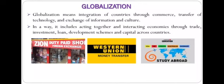From the images given, you can understand what are all the outcomes of globalization. Number 1: a duty-paid shop. Number 2: a Western Union money transfer. Number 3: study abroad. Through globalization, a duty-paid shop owner can import goods from another country and sell them in India, so people get foreign goods, which is an outcome of globalization.